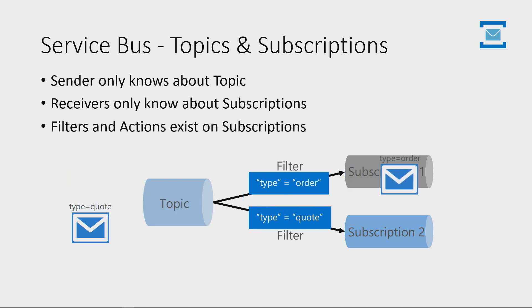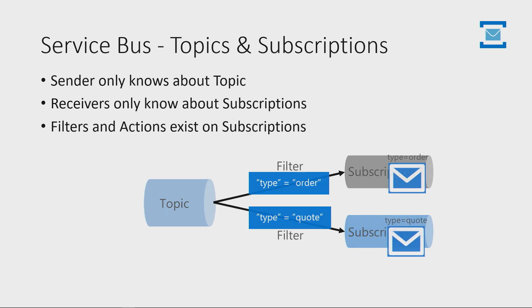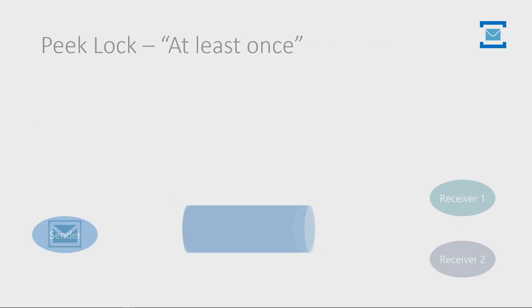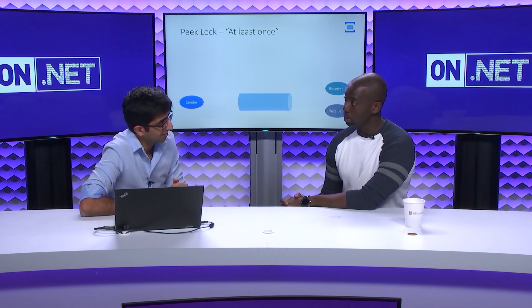We spoke about how we can send to these queues and topics. Now let's look at how we can receive from each of these. For receiving, we essentially have two options: we have the peek lock, which is the at-least-once delivery, and the receive and delete, which is the at-most-once delivery.